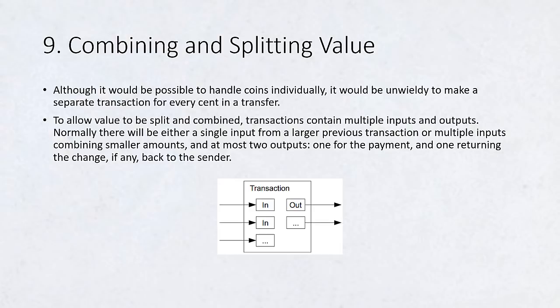It should be noted that fan-out, where a transaction depends on several transactions, and those transactions depend on many more, is not a problem here. There is never the need to extract a complete stand-alone copy of a transaction's history.